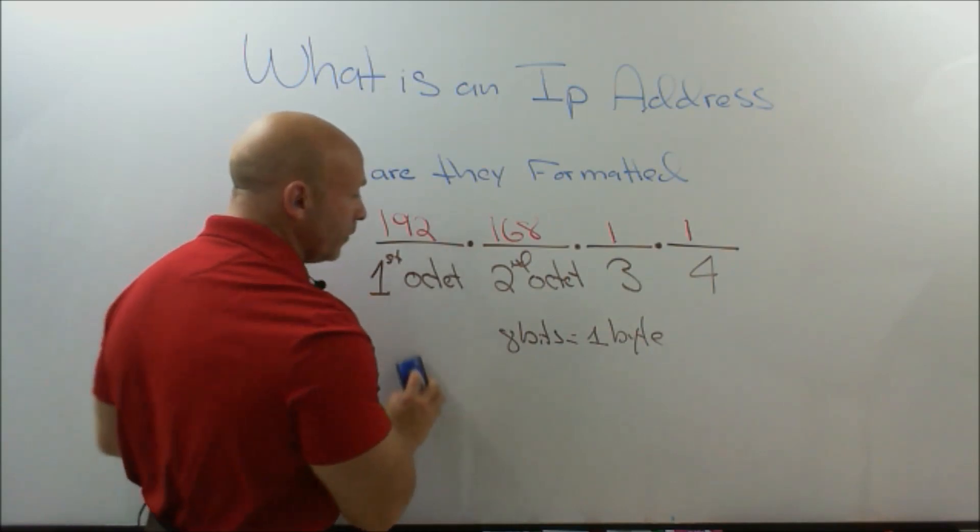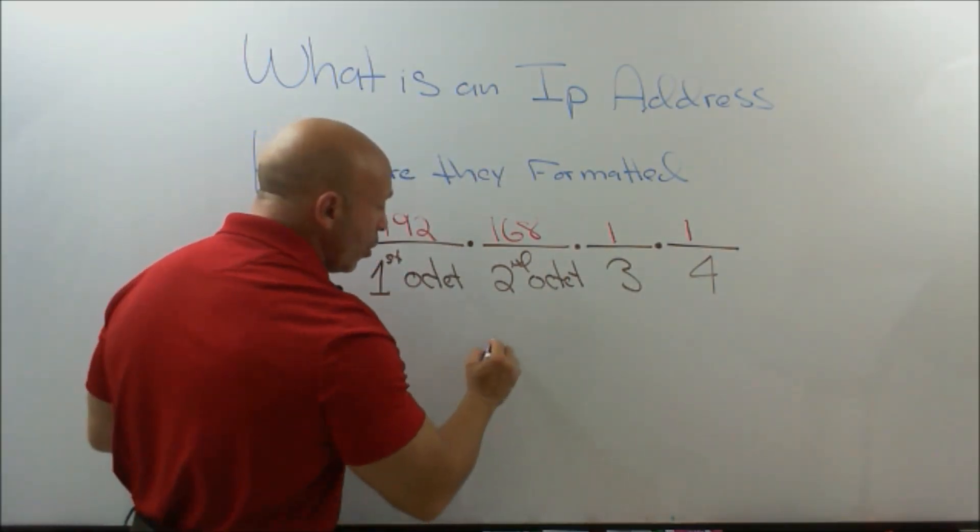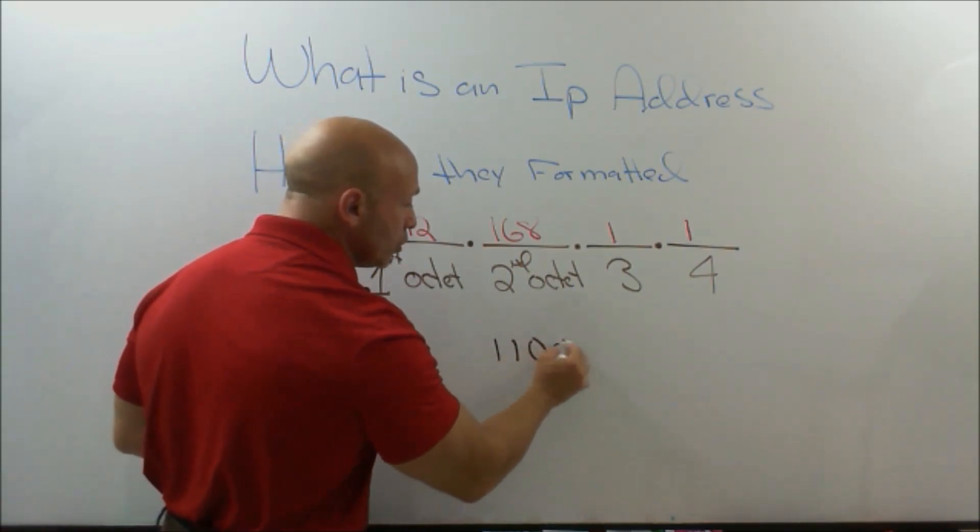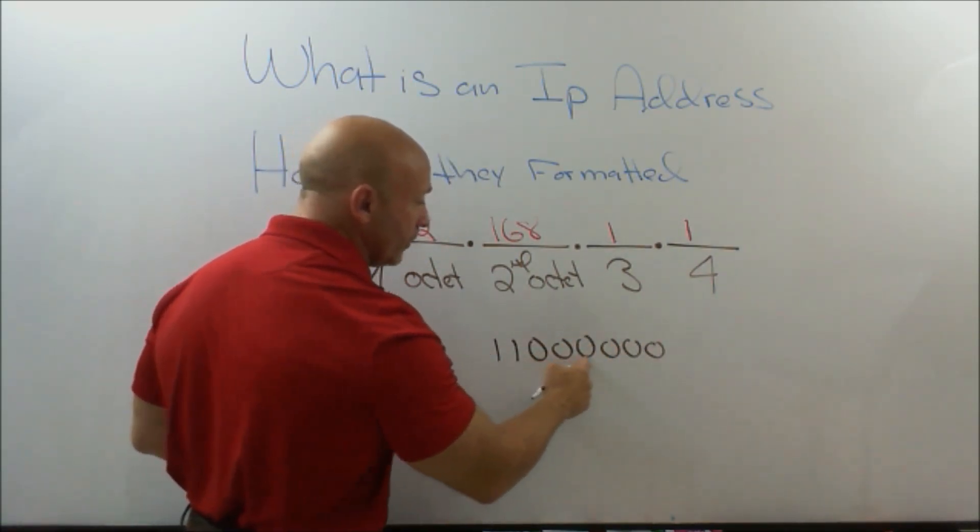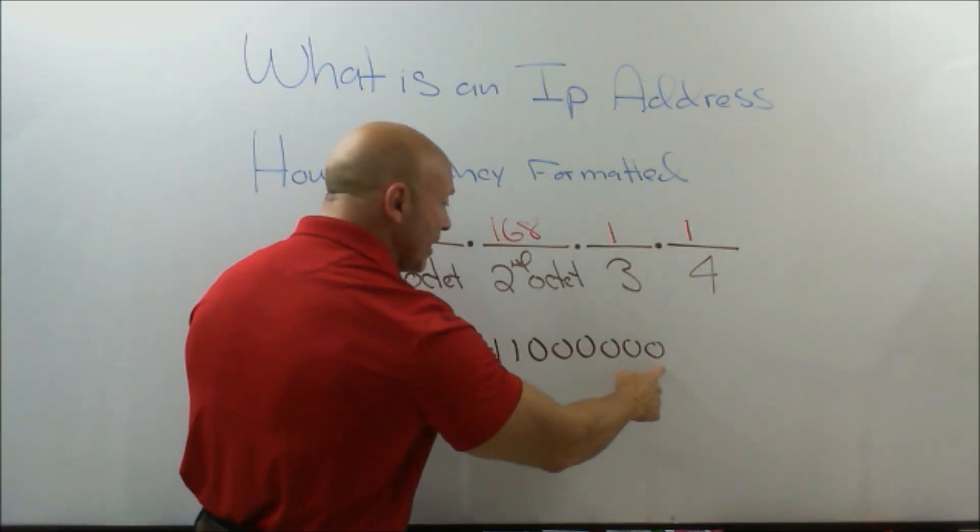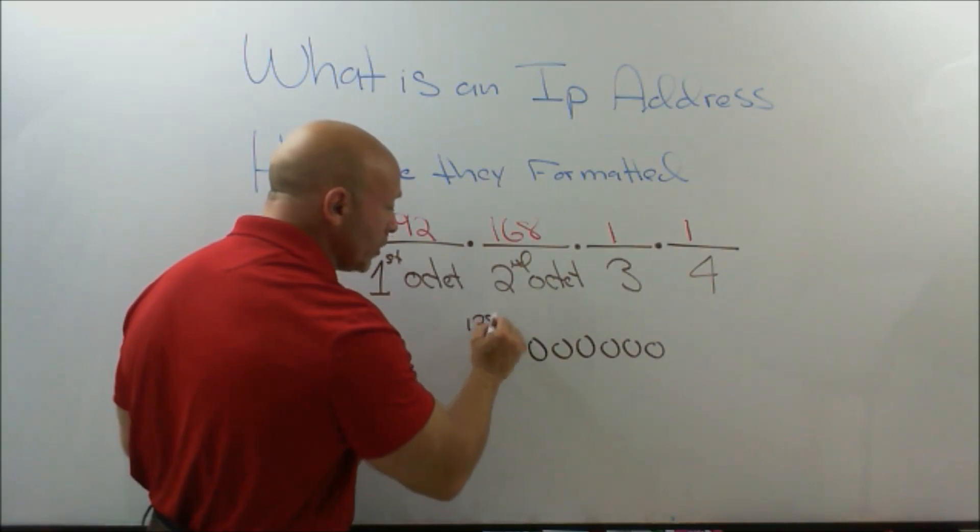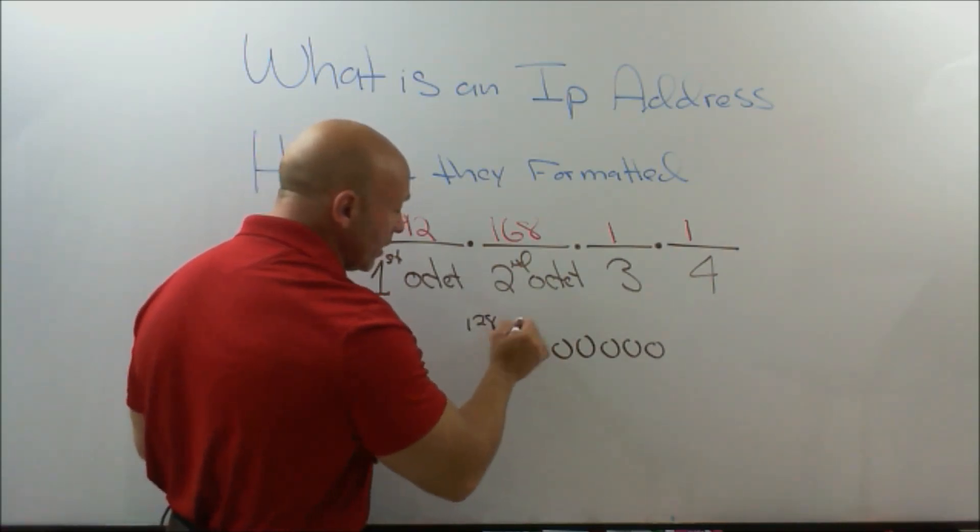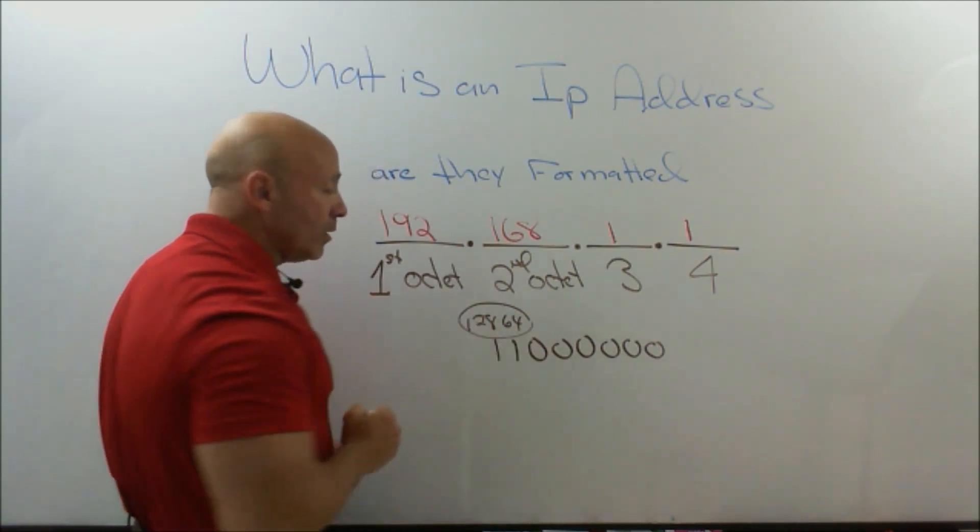The first octet really will look like one, two, three, four, five, six, seven, eight - eight bits creates this byte because we have the 128 and the 64 bit values. And you would see that.